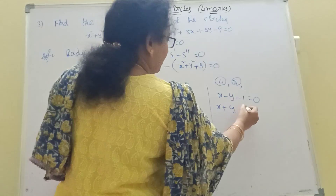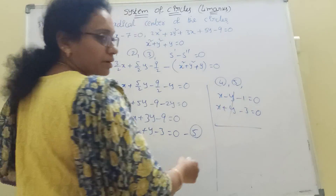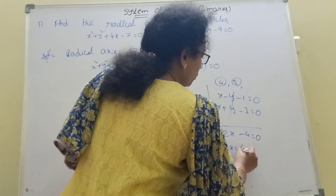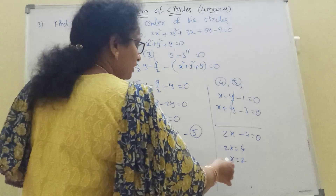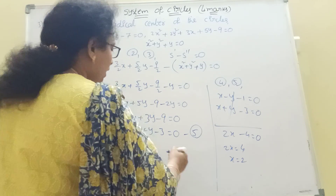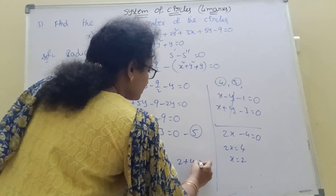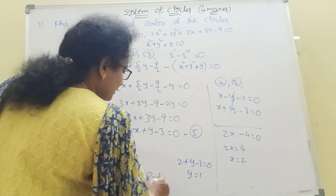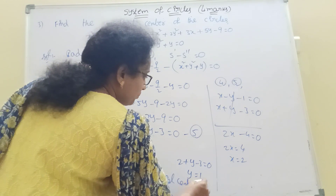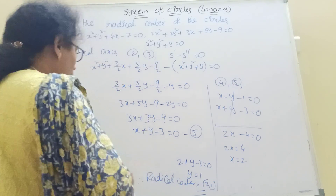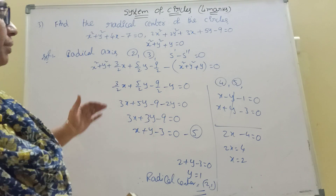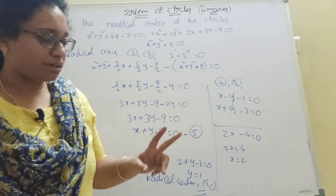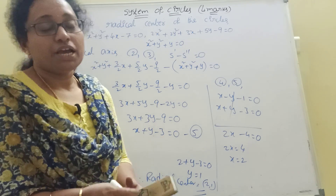Solving the two radical axis equations simultaneously: x minus y minus 1 = 0 and 3x plus y minus 3 = 0, gives x = 1, y = 0... therefore radical center = (2, 1). The radical center is at (2, 1). This is the radical center — a very important result. Thank you for watching. Please subscribe and share my channel.